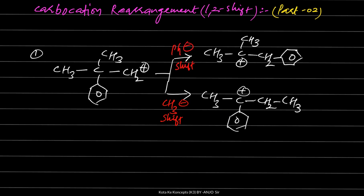Now, which shift is better? We need to see that this carbocation is not going to undergo back bonding. This carbocation will not be able to stabilize the group which would donate the lone pair via back bonding. In this condition, this carbocation will not be able to work with the group to stabilize via back bonding.